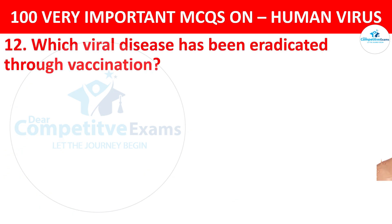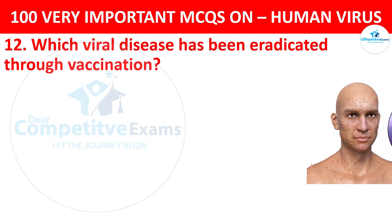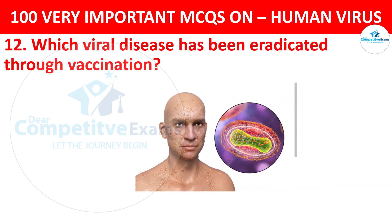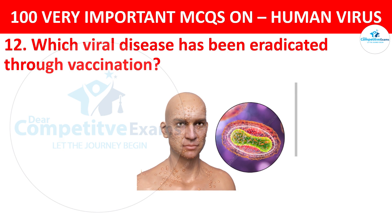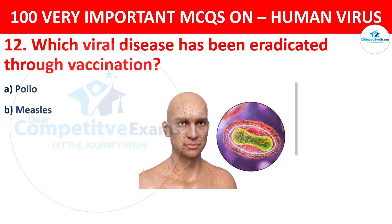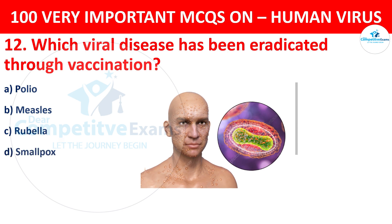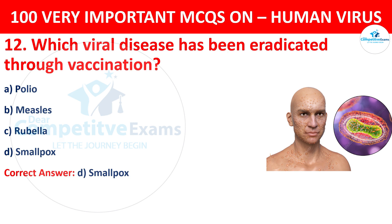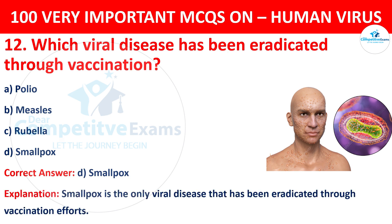Question 12. Which viral disease has been eradicated through vaccination? The options are polio, measles, rubella, or smallpox. The correct answer is D, that is smallpox. Smallpox is the only viral disease that has been eradicated through vaccination efforts.